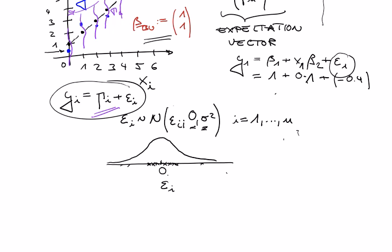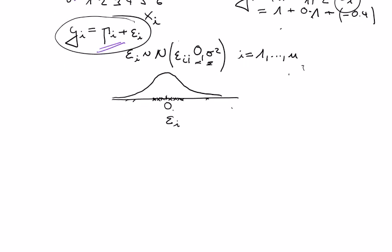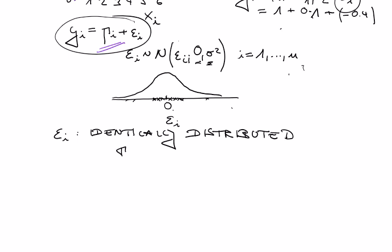The epsilon_i's are assumed — as a model assumption — to be identically distributed. This means they all have expectation zero and variance sigma squared — some fixed positive value such as 1 or 0.5 — and this holds for all i. So they all have the same distribution.